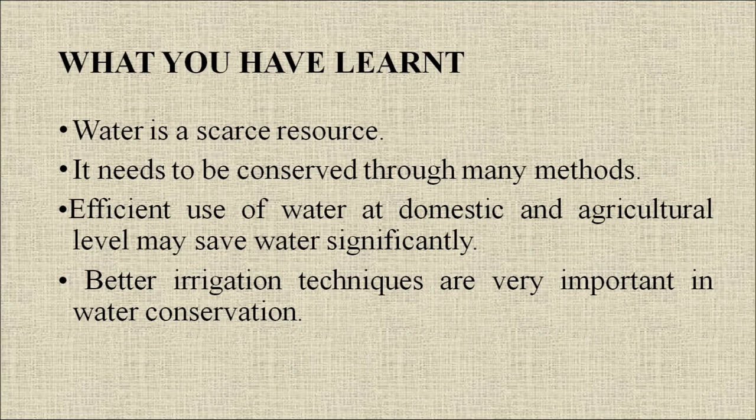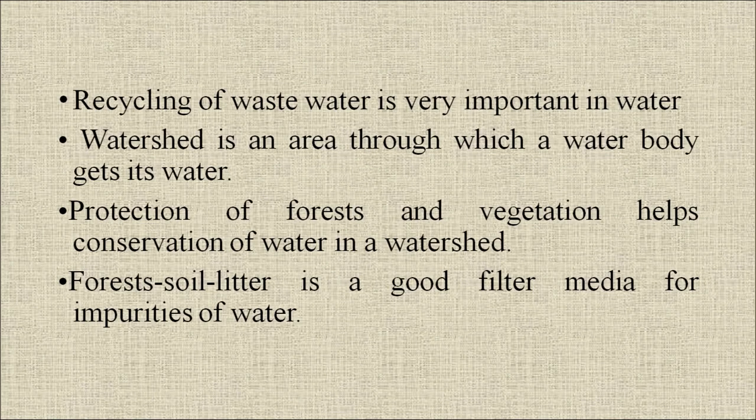Before we wrap up, let us recap the main points: water is a scarce resource and needs to be conserved through many methods; efficient use of water at domestic and agricultural level may save water significantly; better irrigation techniques are very important in water conservation; recycling of waste water is very important; a watershed is an area through which a water body gets its water; protection of forest and vegetation helps conservation of water in watershed; and forest soil litter is a good filter media for impurities of water. Thank you.